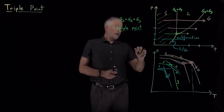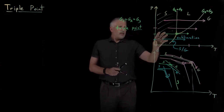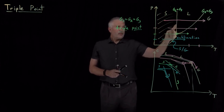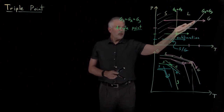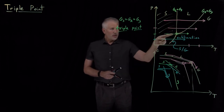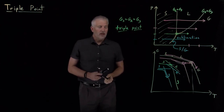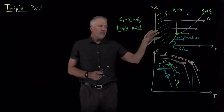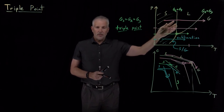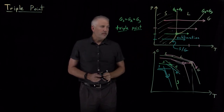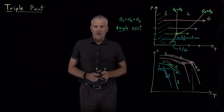This begins to point out the feature that we can sometimes have just one phase, sometimes we're on a coexistence line where we have two phases in equilibrium — solid-liquid, liquid-gas, solid-gas — or sometimes, like at the triple point, we have three phases in coexistence with each other. Those different locations on the phase diagram — single-phase, double-phase, or triple-phase regions — have important thermodynamic differences as well. We'll cover that next.